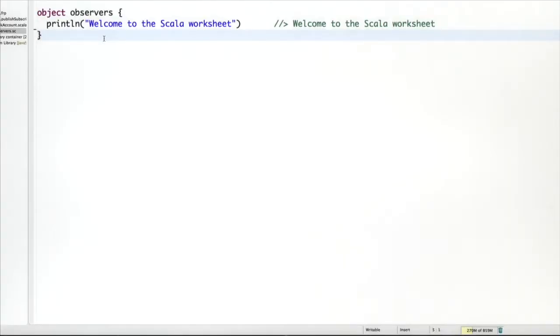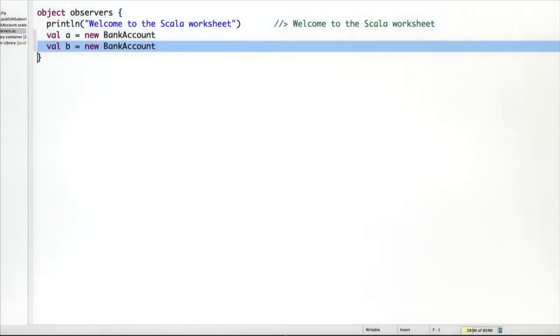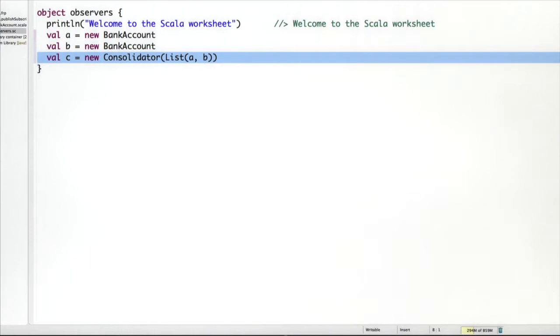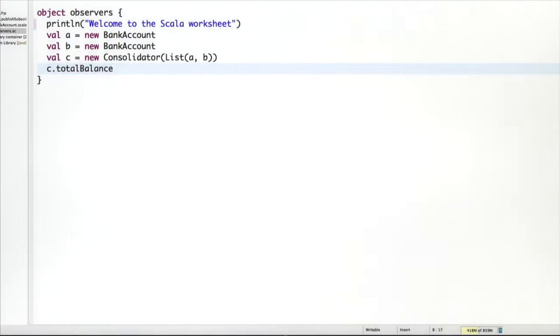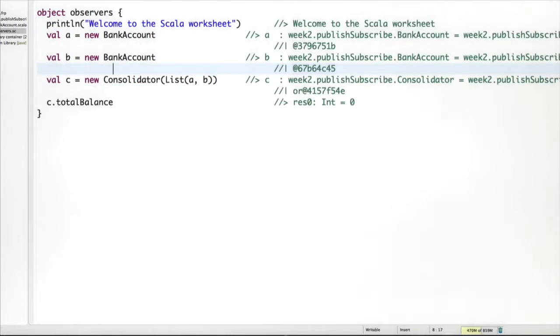So let's observe bank accounts with a little Scala worksheet. I've called it observers and I've put it in the package week2.publish.subscribe where I assume the bank account class is also located. So let's define a couple of bank accounts. We have bank account A, bank account B, and now let's define a consolidator that takes the two bank accounts and always maintains their total balance. So we can find out what the total balance is by just calling c.totalBalance. And of course the total balance initially is zero.